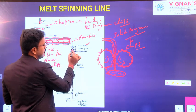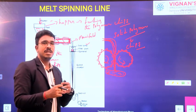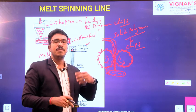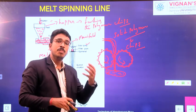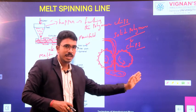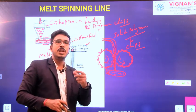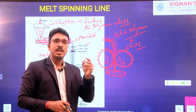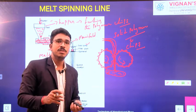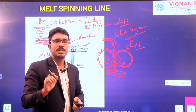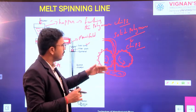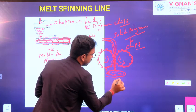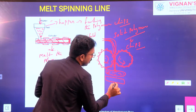Here is the filter pack. It consists of sand and some other particles. What it does is — if there are any unmolten particles or impurities in the molten polymer, they can be filtered out. Otherwise, any unmolten polymer chips, dust, and impurities may come along with the filaments, which will affect the quality of the filament. That's why we filter out all the impurities here, and then we take the molten polymer to the spinneret.